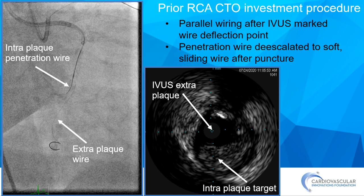For investment procedures: this patient was tried with antegrade and retrograde without success, then brought back after an investment procedure. They had a persistent dissection flap. Using IVUS again to identify where there may be some plaque to puncture, we directed a puncture wire into that plaque, and once we put a jacketed wire back in, we were able to enter the true lumen distally without anything too fancy. Don't forget to use IVUS to improve the likelihood of success with antegrade wiring.